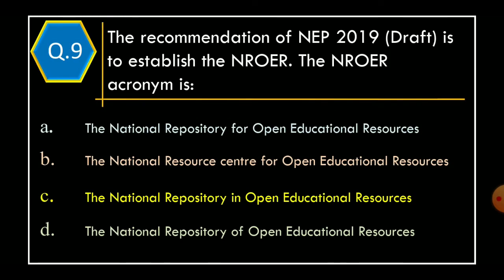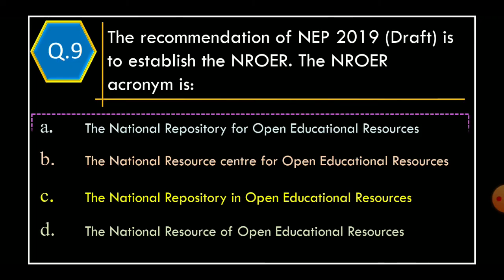Question 9. The recommendation of NEP 2019 draft is to establish the NROER. The NROER acronym is: Option A: The National Repository for Open Educational Resources. Option B: The National Resource Center for Open Educational Resources. Option C: The National Repository in Open Educational Resources. Option D: The National Repository of Open Educational Resources. The correct option is Option A: The National Repository for Open Educational Resources.